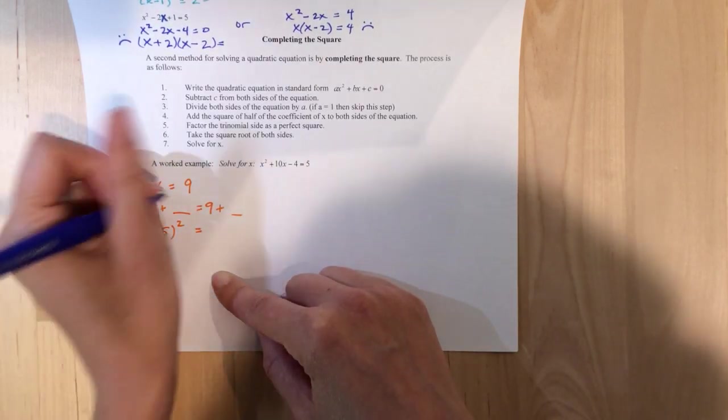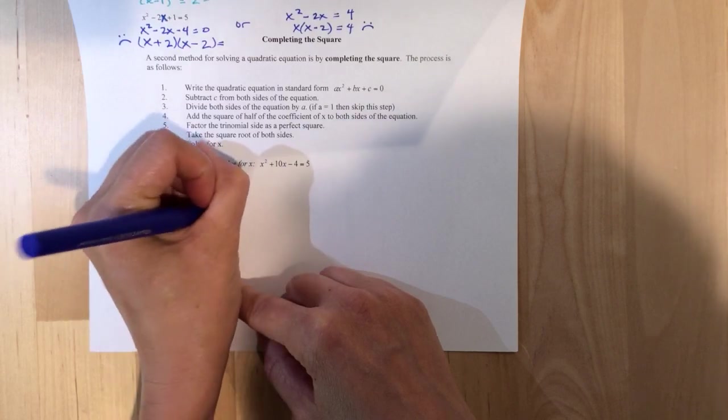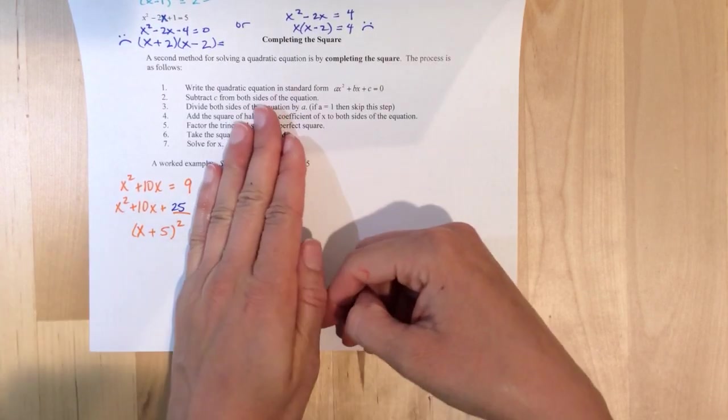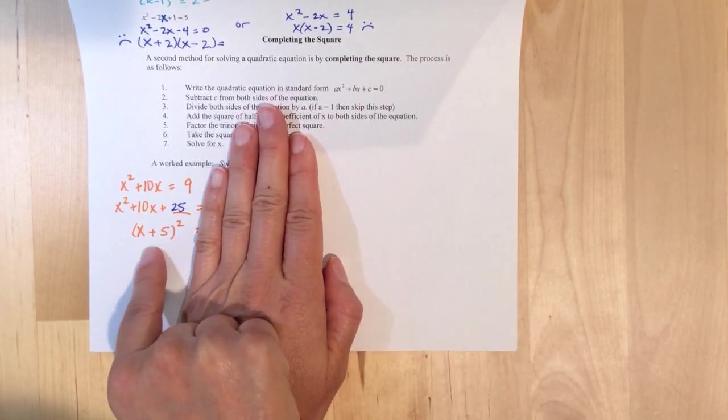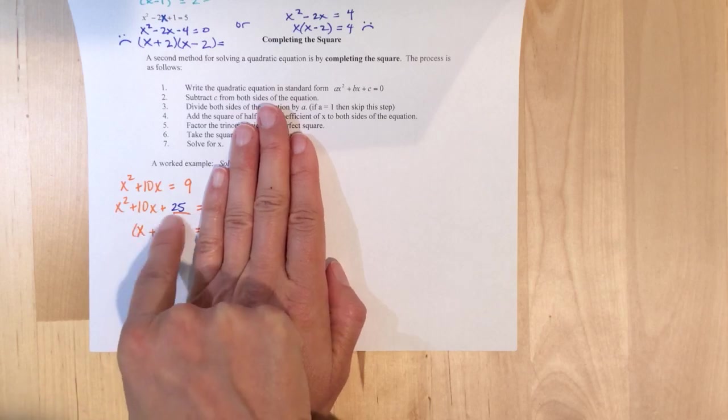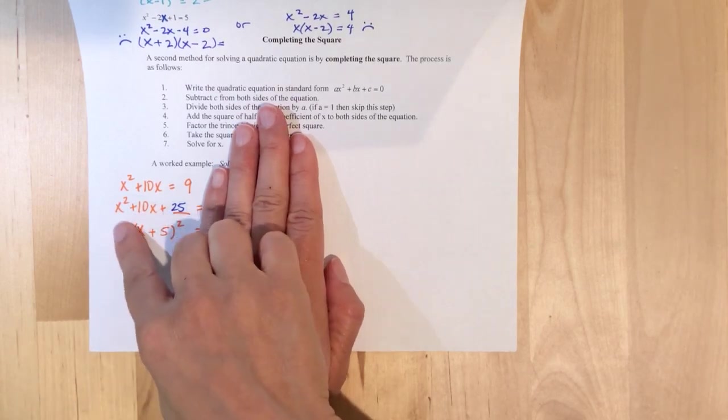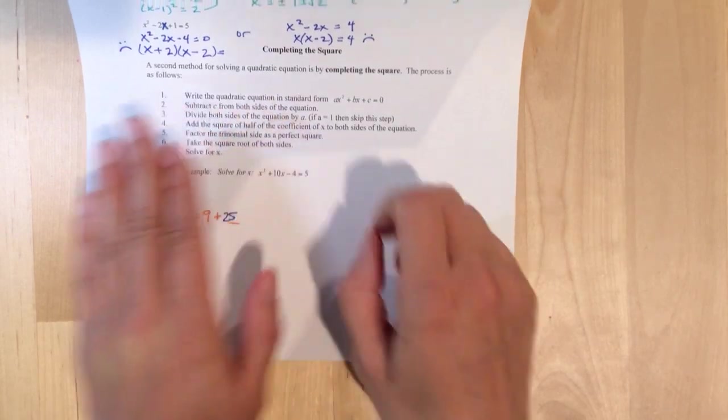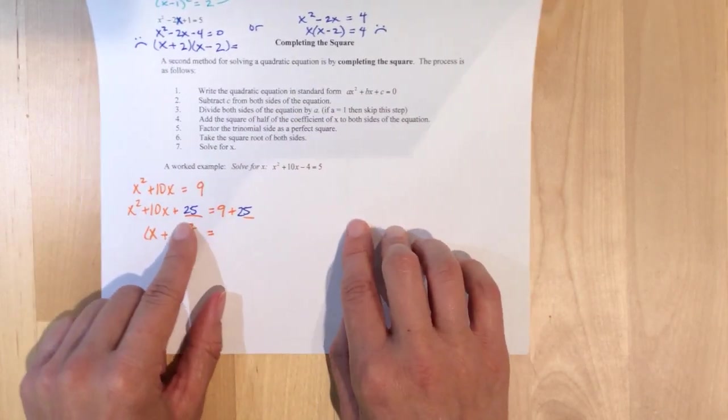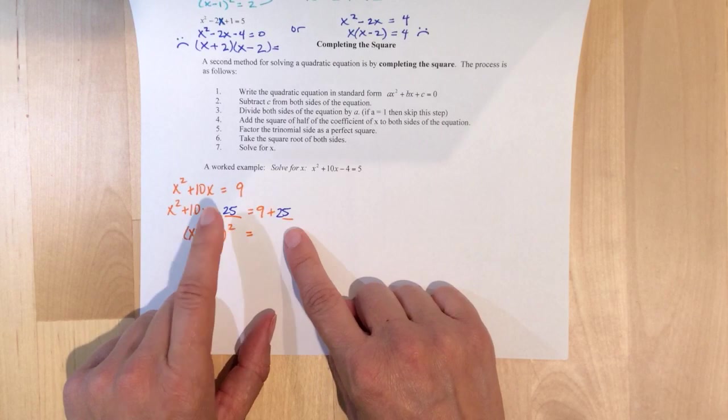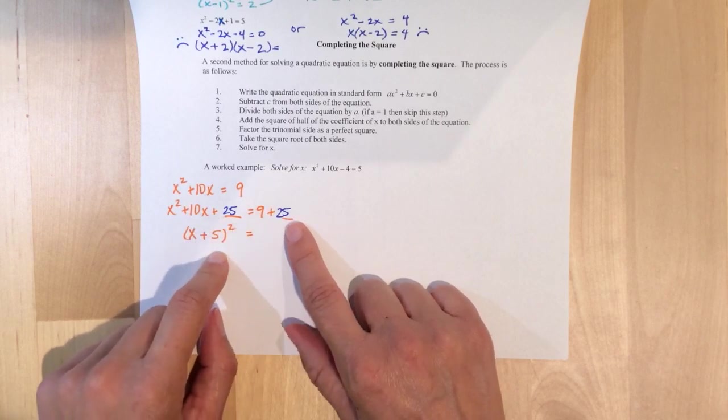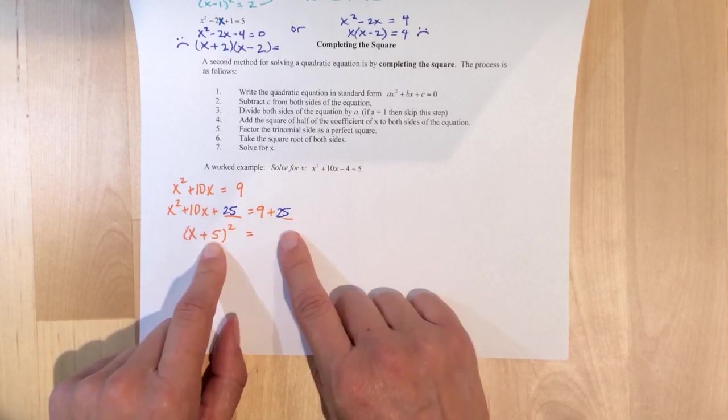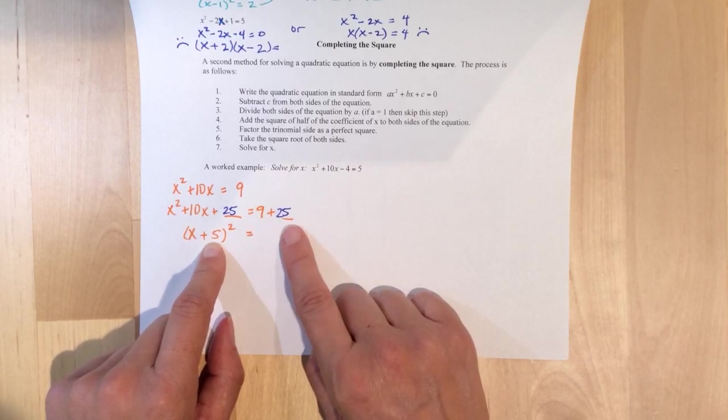But now, on the left-hand side, 25 is included in this perfect square binomial. Because if we were to expand it by factoring, or aka FOIL, you would get x squared plus 10x plus 25. So, the 25 is hidden in this here. But remember, whatever we add to one side of the equal sign, we have to add to the other. So, we have, I guess, invisibly, secretively added 25 in on the left. But we have to visibly and actually add 25 on the right.